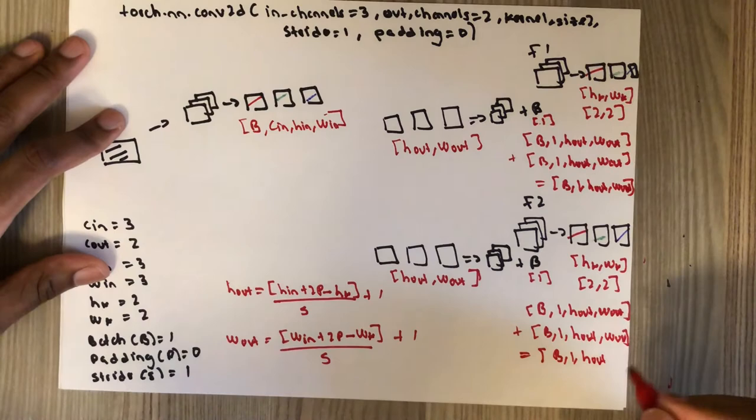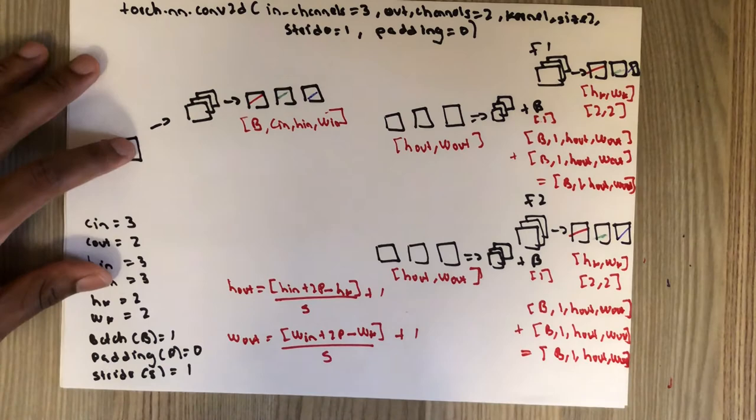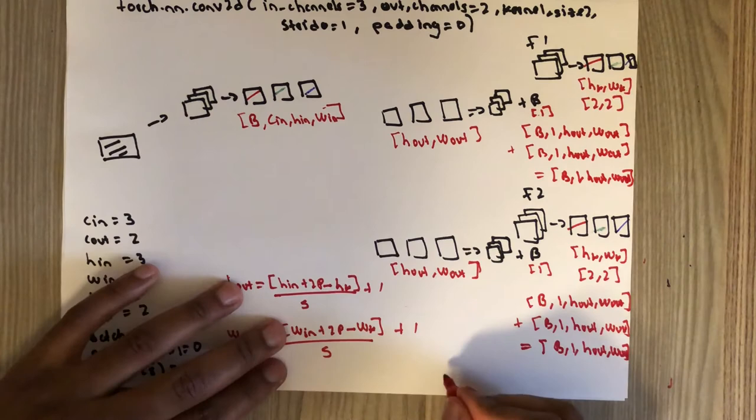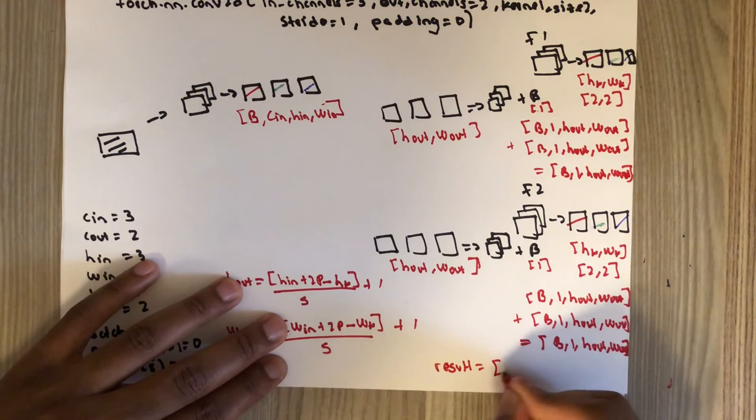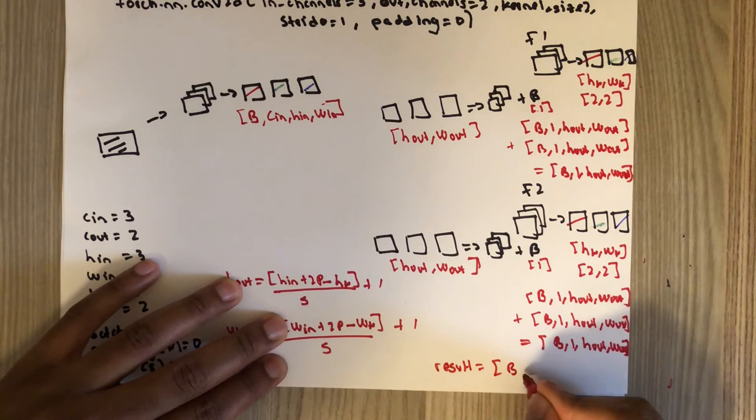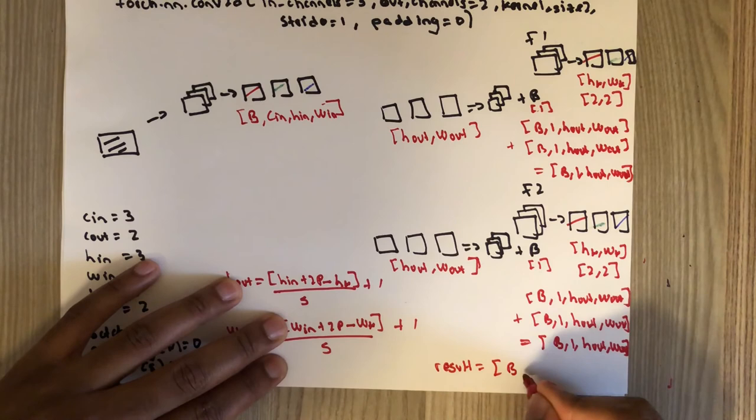The two resulting tensors from filter one and filter two are then concatenated along the channel dimension. The final output dimension of this Conv2d layer is B × C_out × H_out × W_out. Thank you.